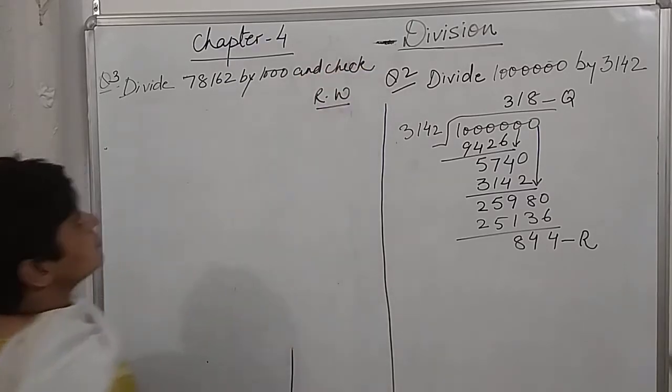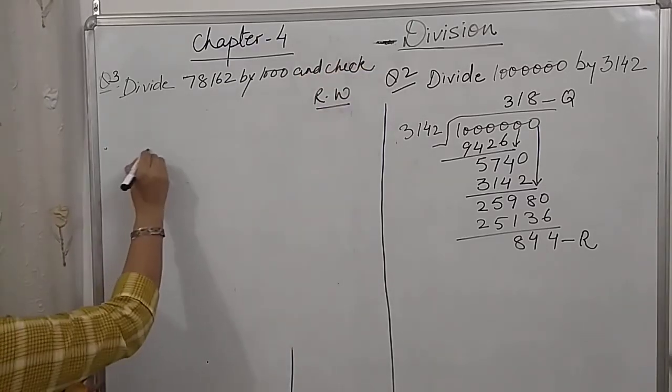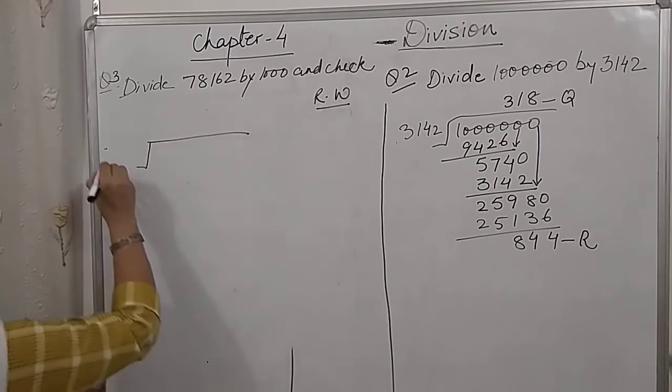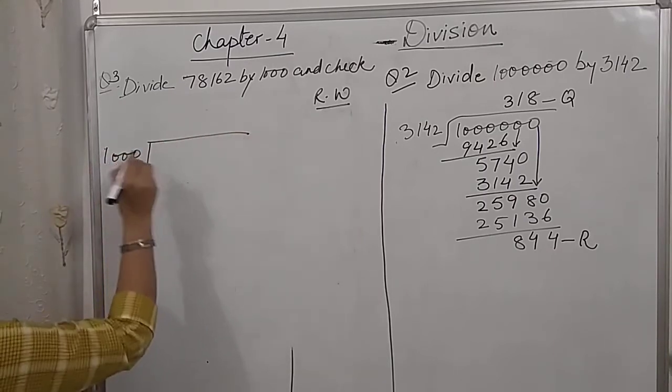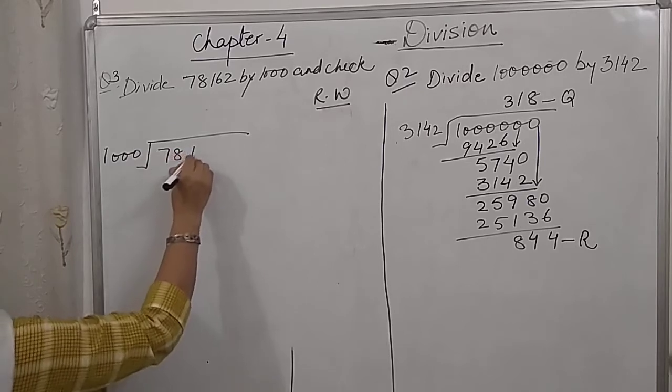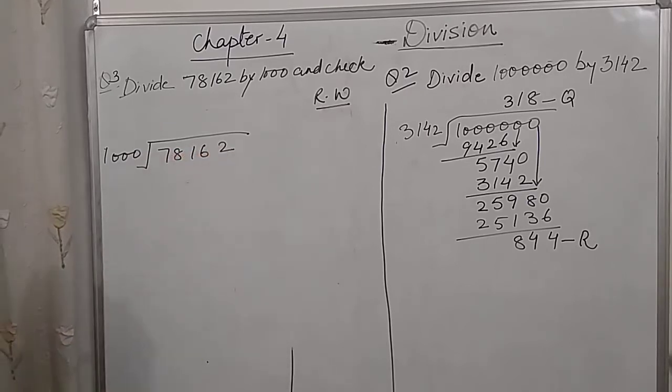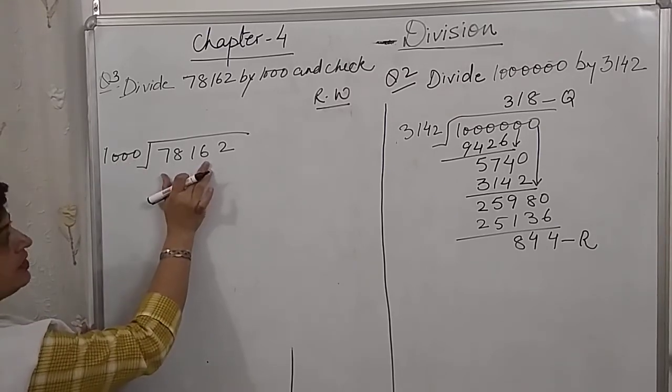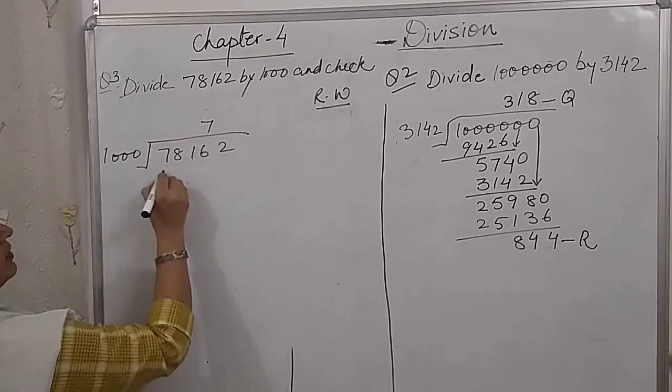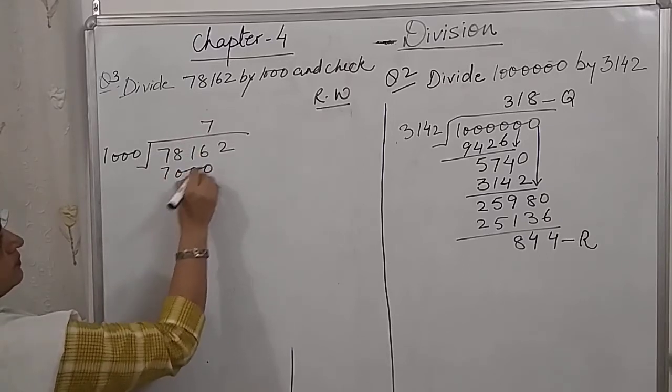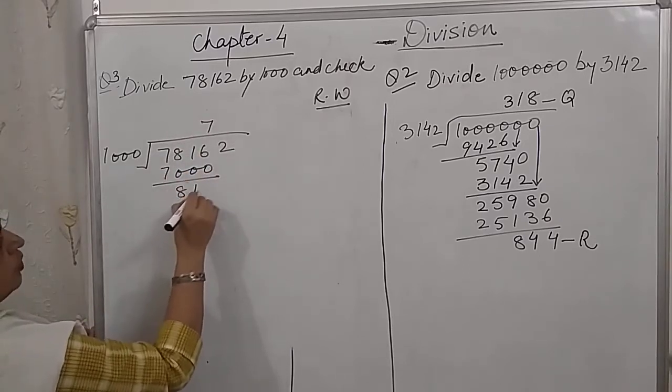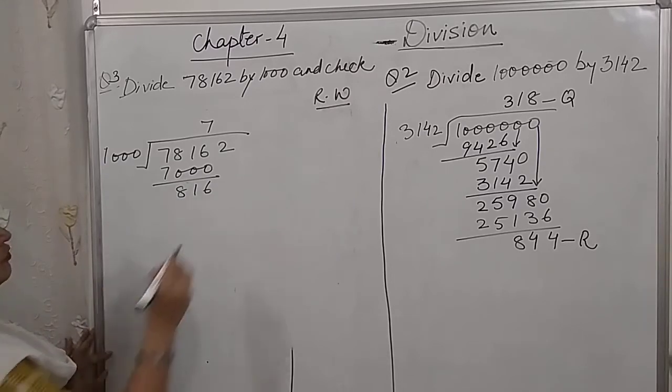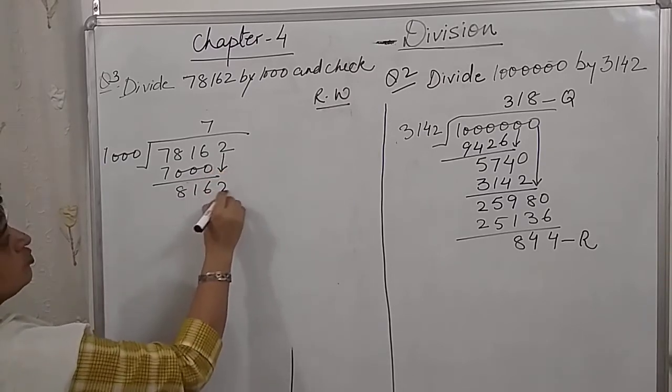And check. Now, in this case, the divisor has got 1 and 0's. It is 1000. 78162. Let's see. Seems very easy. 4 digits. Yes, first 4 digits. They make the first partial dividend. 7's are 7000. 8, 1, 6 is the remainder in the first step and we take down this 2.